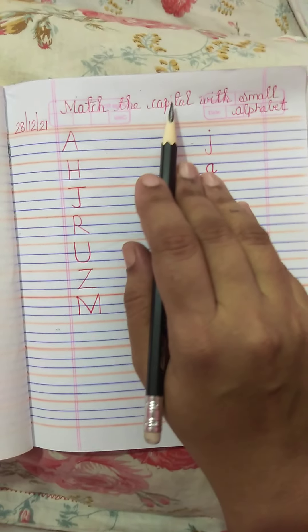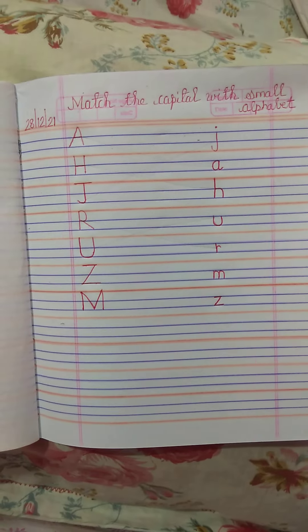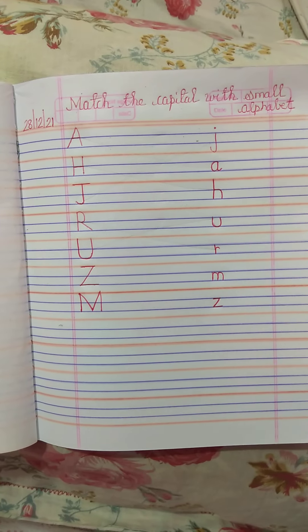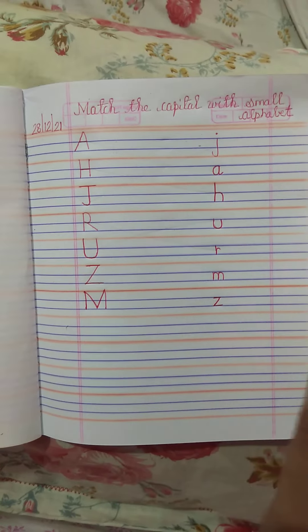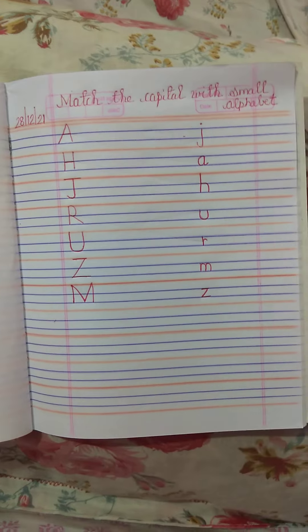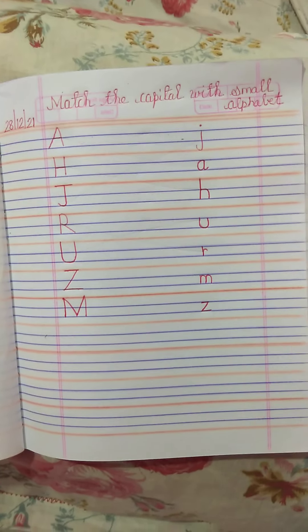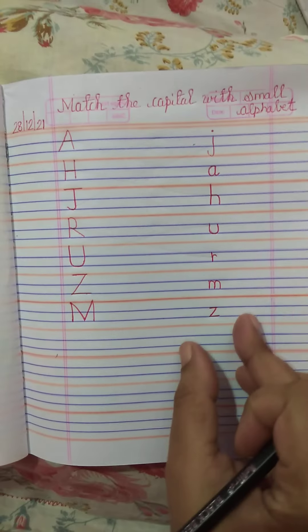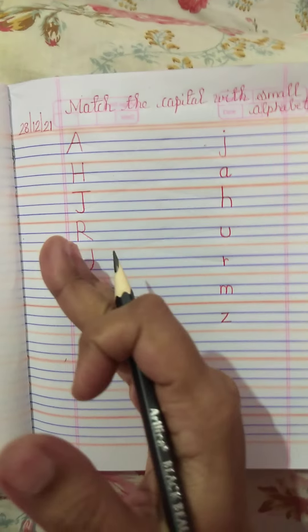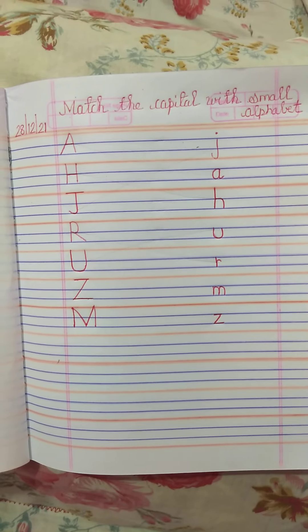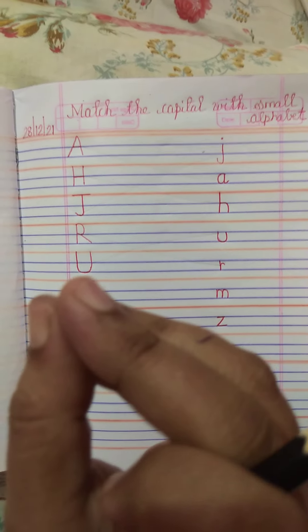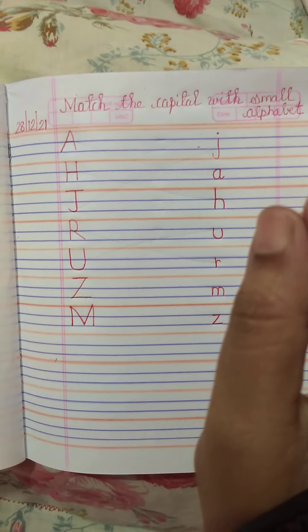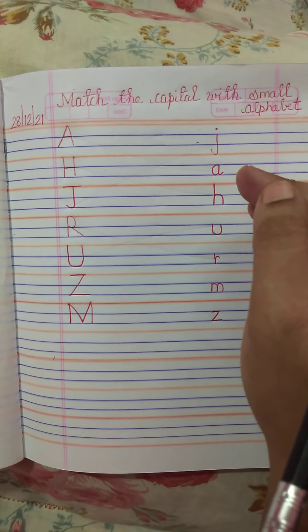Now children, we had already learned about capital and small alphabet. You can identify capital as well as small letters. Right children, capital A, capital H — you can identify letters. You can also identify small letters such as small j and small a.